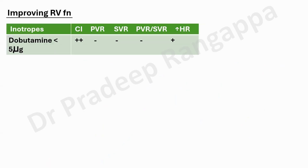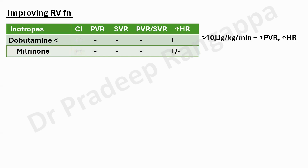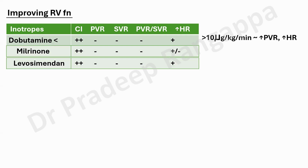To improve RV function, we have inotropes. Dobutamine can be used; it increases cardiac index and has no effect on increasing pulmonary vascular resistance up to 10 mcg/kg/min, which is reasonably safe. Above 10 mcg/kg/min, it is shown to increase pulmonary vascular resistance. Milrinone is another drug with similar effects but a slightly less pronounced tachycardia response than dobutamine. Levosimendan is another option. Importantly, tachycardia is bad for RV afterload, so efforts must be made to reduce it using beta blockers or other agents.